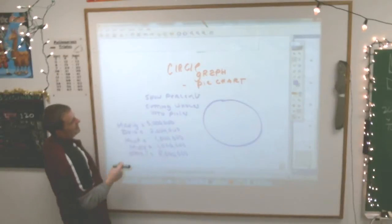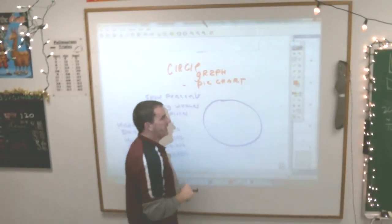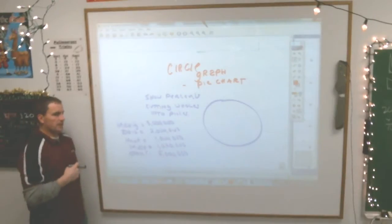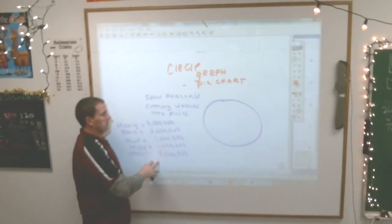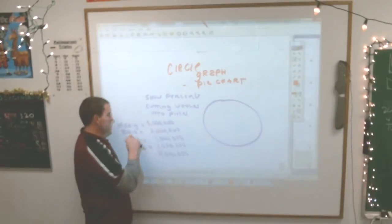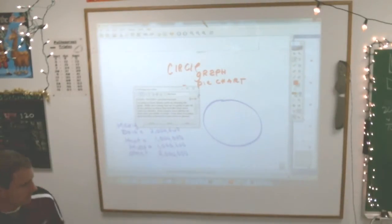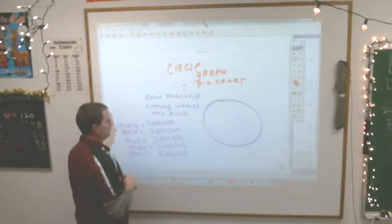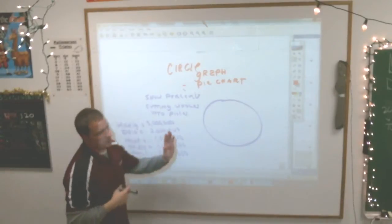And then there was Missouri, which is one million. And then there was other states, which was five million. I want to go to those other states. Why would I want to show this in a pie graph? Because it's a lot easier to look at pictures than it is to look at numbers.